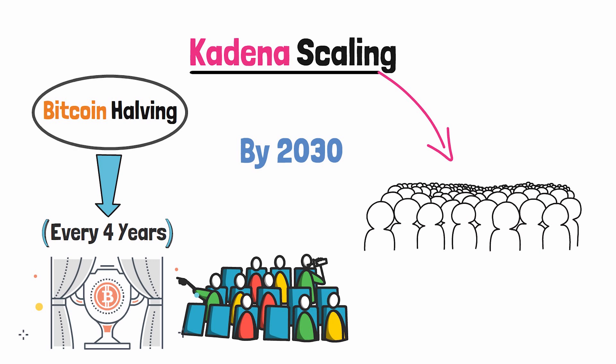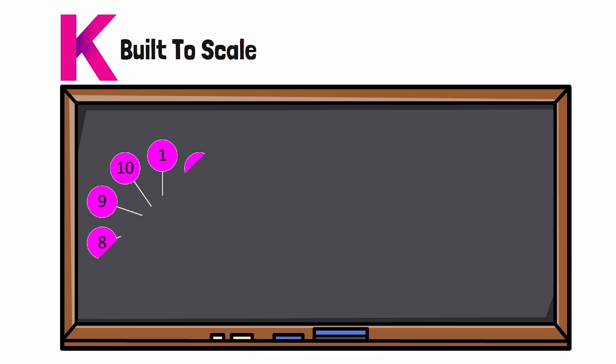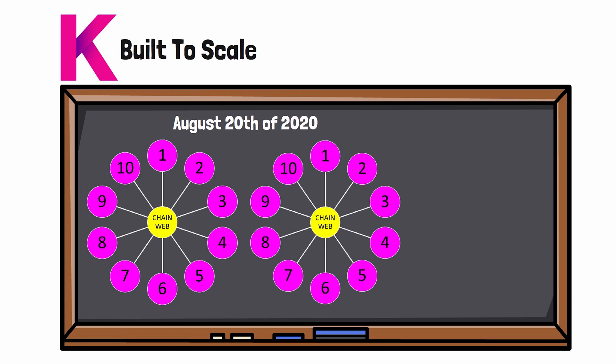Kadena was built to scale from the very beginning. The Kadena blockchain network initially launched with a 10 blockchain network architecture, and on August 20th of 2020, the Kadena network hard forked and scaled from 10 blockchains to 20 blockchains.